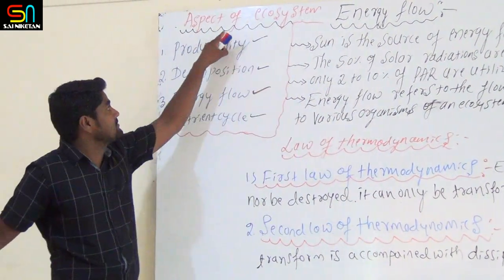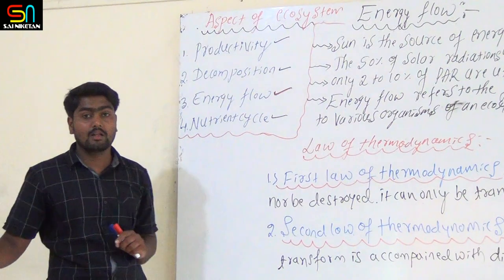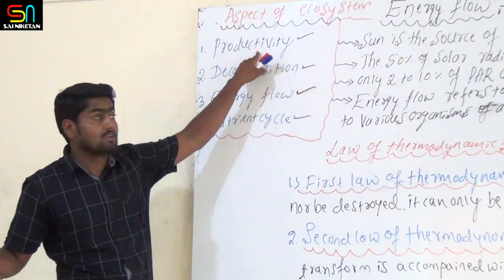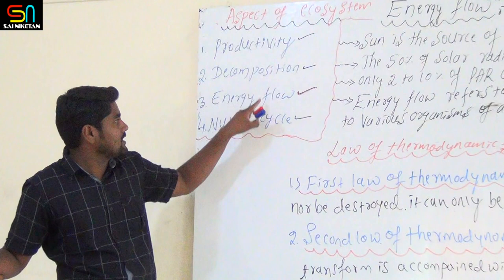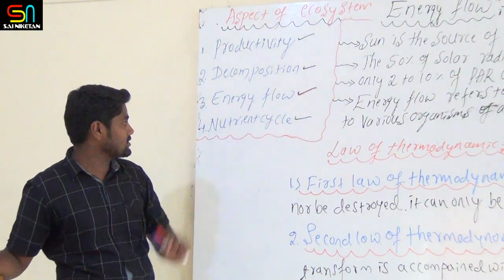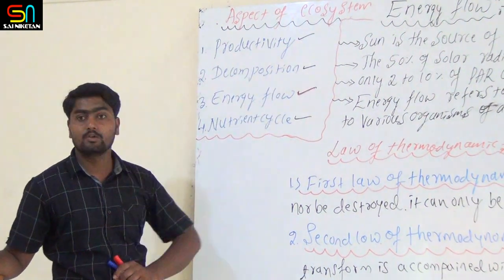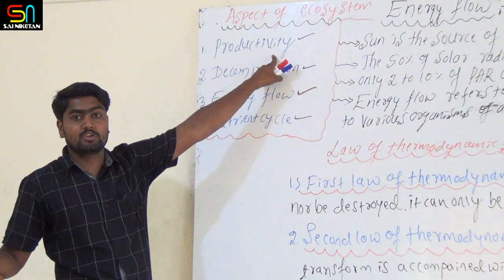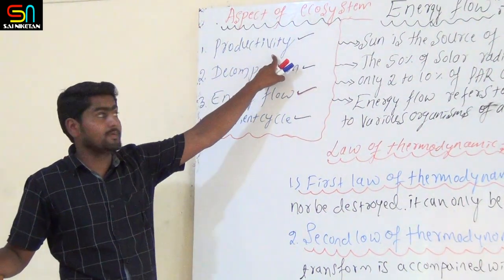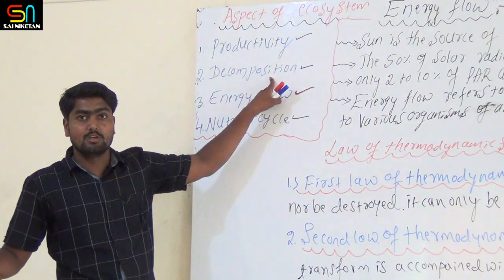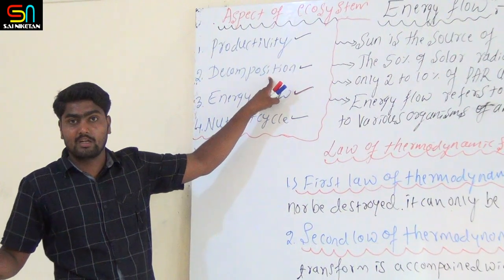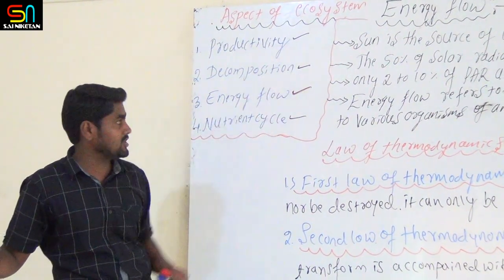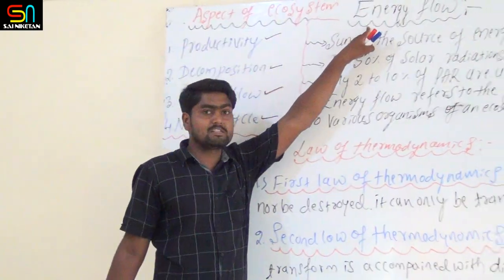Aspects from ecosystem — already you know there are 4 aspects of ecosystem. First one is productivity, second one is decomposition, third one is energy flow, fourth one is nutrient cycle. Productivity is the rate of biomass production. Decomposition is the process of conversion of complex organic material to a simpler form. Third aspect is energy flow.